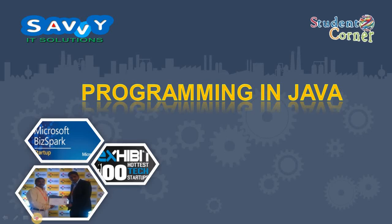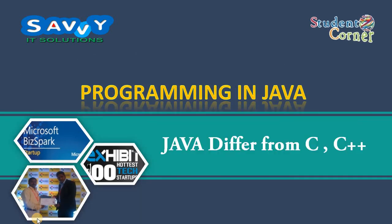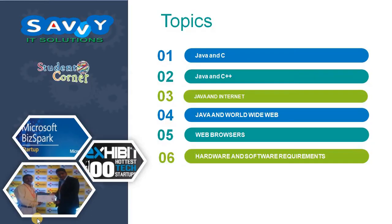Welcome to Savi IT Solutions. Today we are making a video on programming in Java. We are discussing about how Java differs from C and CPP. Topics we need to cover: Java and C, Java and C++, Java and Internet, Java and World Wide Web, Java and Web Browser, and hardware and software requirements for installing Java.